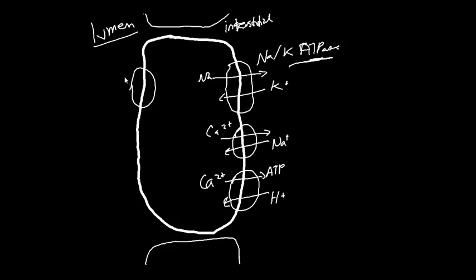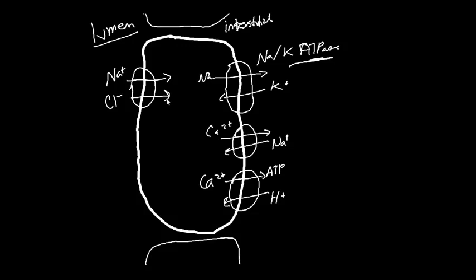In the distal convoluted tubule, sodium and chloride are both driven into the cell together through the sodium-chloride symporter. By actively pumping sodium out into the interstitial space, we create a low-sodium concentration inside the cell — like a vacuum — that draws sodium from the lumen into the cell. Where sodium goes, water follows, and that's how we reabsorb water.